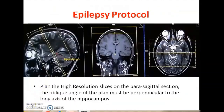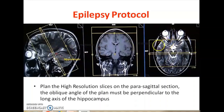The epilepsy protocol, along with the routine sequences, requires a 2mm high-resolution T1 and T2 oblique coronal plane for the hippocampus. Take the sagittal T2 or T1 image, identify the hippocampus, and plan obliquely in the coronal plane perpendicular to the hippocampus area. Adjust all the other two planes to correct the obliquity. If you want volumetric analysis, then go for a 3D sequence.